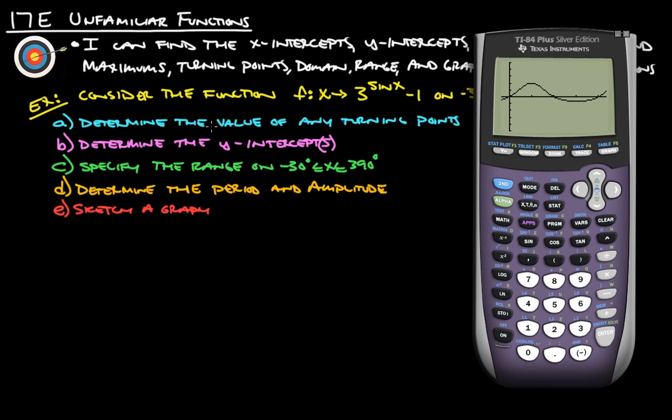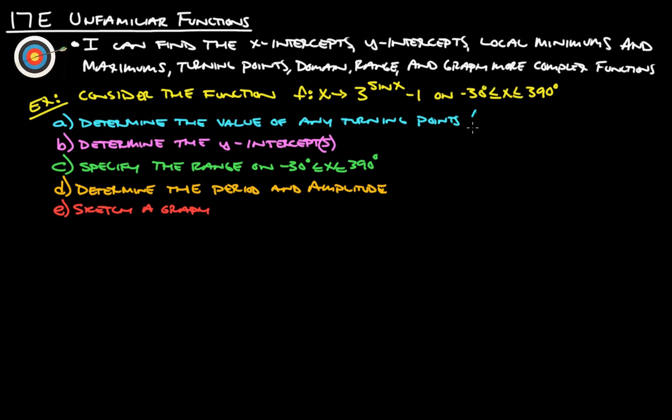So first thing we're going to do is determine the value of any turning point. So basically we're going to find this maximum, and we're going to find that minimum. Alright, so go into second, calculate, maximum, and let's find this thing. Enter, get to the right of the maximum, and enter, and then guess. And we get 90.00007, which means 90 degrees, and 2. So we've got 90 degrees at a height of 2, and this is our max.